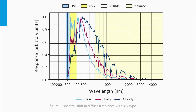On a day with a clear sky, the irradiance reaching the Earth's surface is typically in the range of 700 to 1300 watts per square meter at local solar noon, depending on latitude, altitude, and time of year. On a cloudy day, the spectral composition of light is different from that on a clear day: the relative amount of UV is less and the relative amount of infrared light is higher, because shorter wavelengths scatter more strongly.